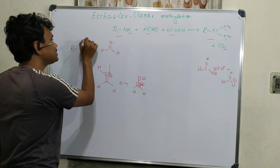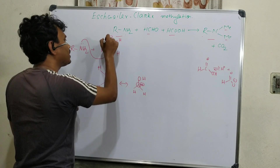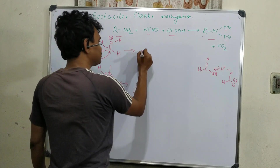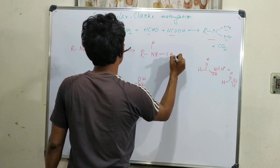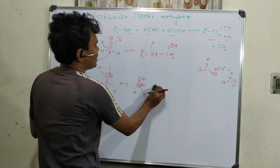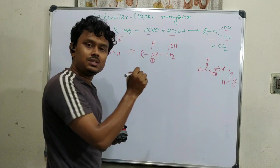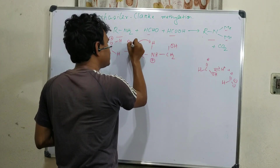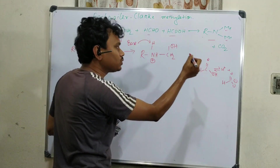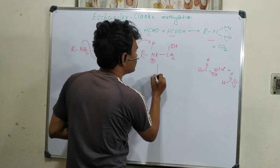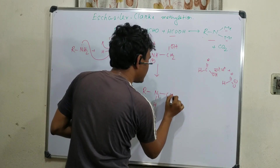With positive charge on the carbon, the nitrogen attacks. This produces R-NH, H, CH₂, and OH as an intermediate. After this attack, the nitrogen becomes positively charged, so this proton can easily be extracted by a base. Other amine molecules or even another molecule of formaldehyde can act as a base, taking the proton to produce NH and CH₂OH.